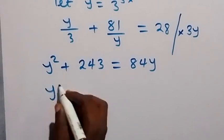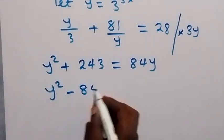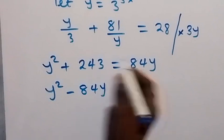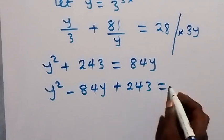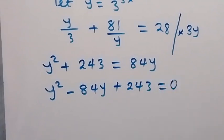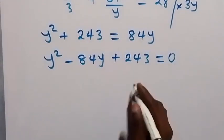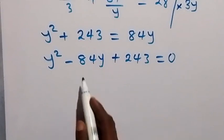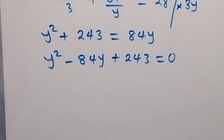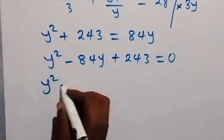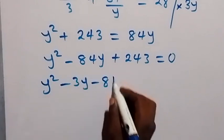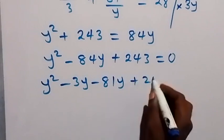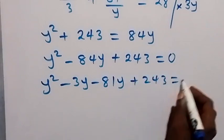In the next step, let's bring everything to one side to form a quadratic equation. This gives us y squared minus 84y plus 243 equals zero.